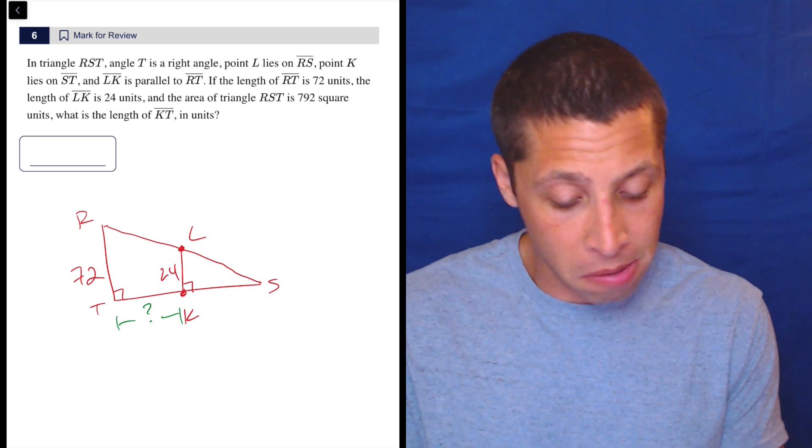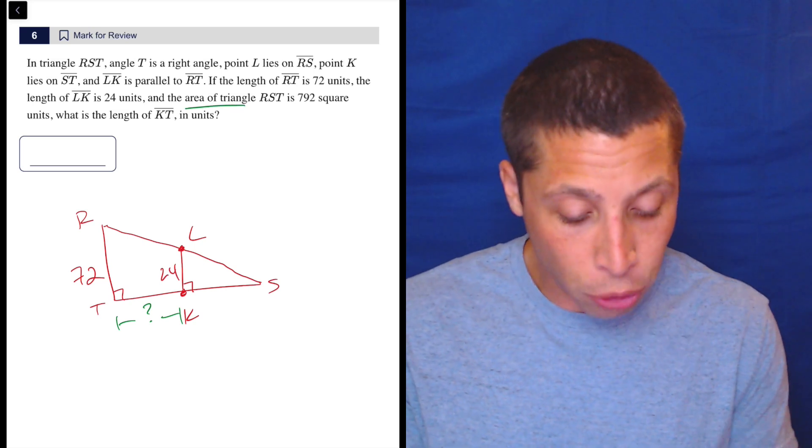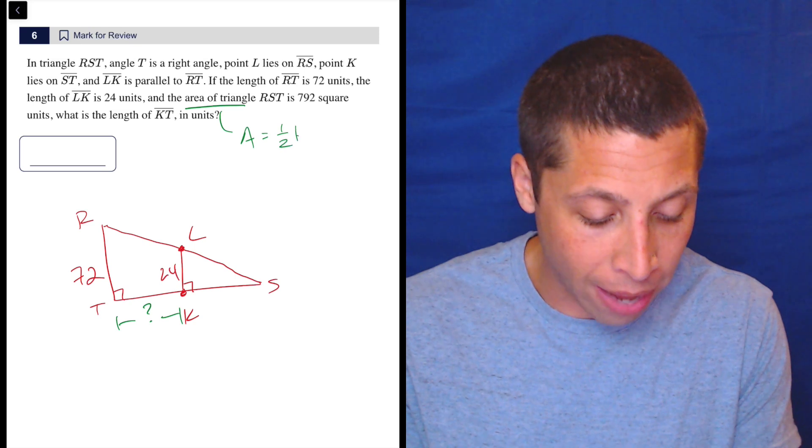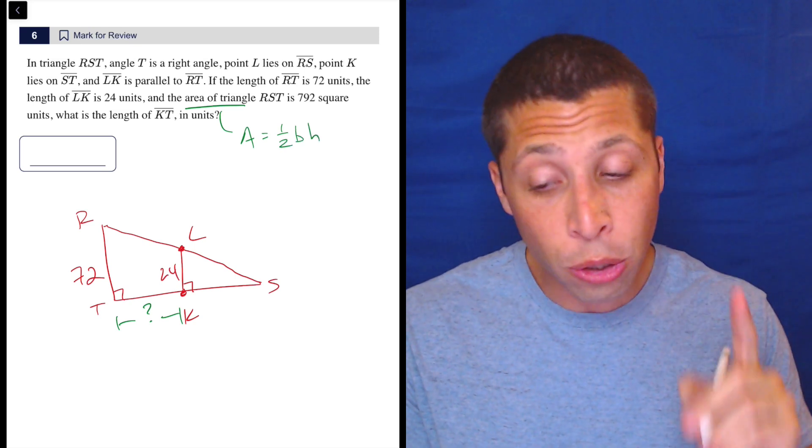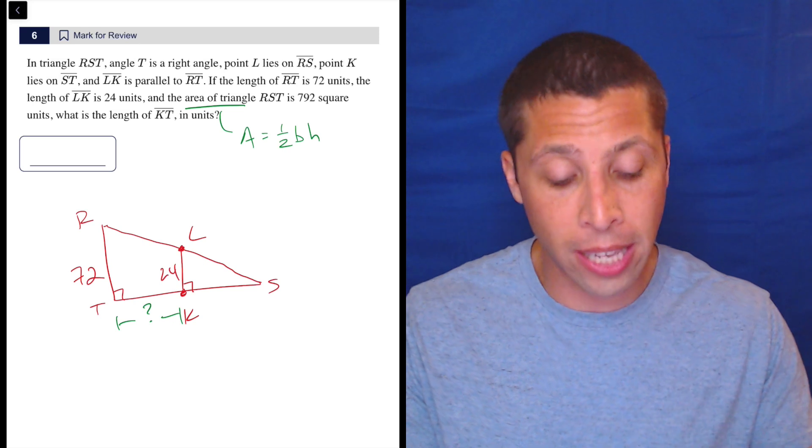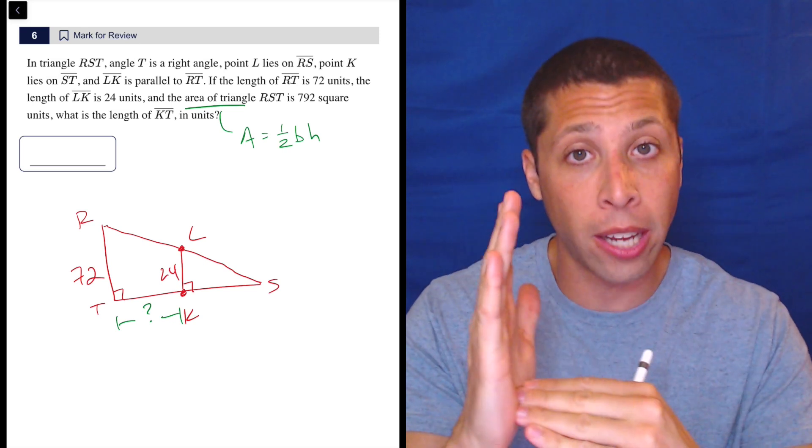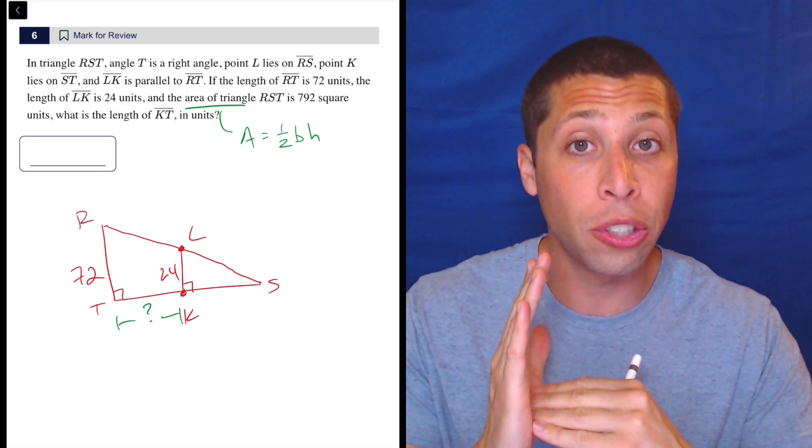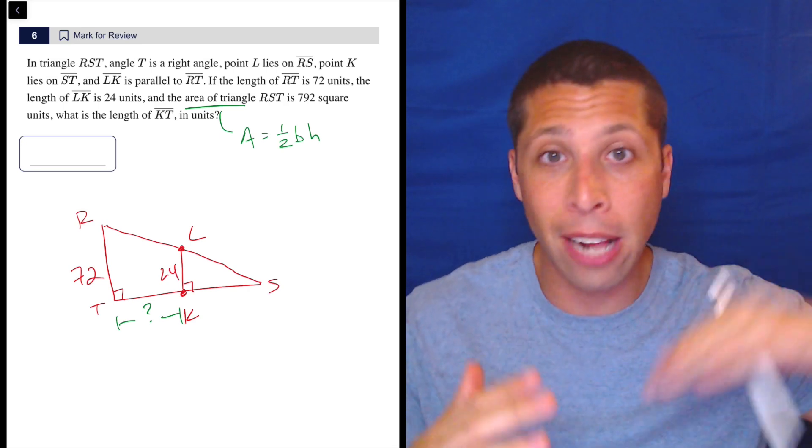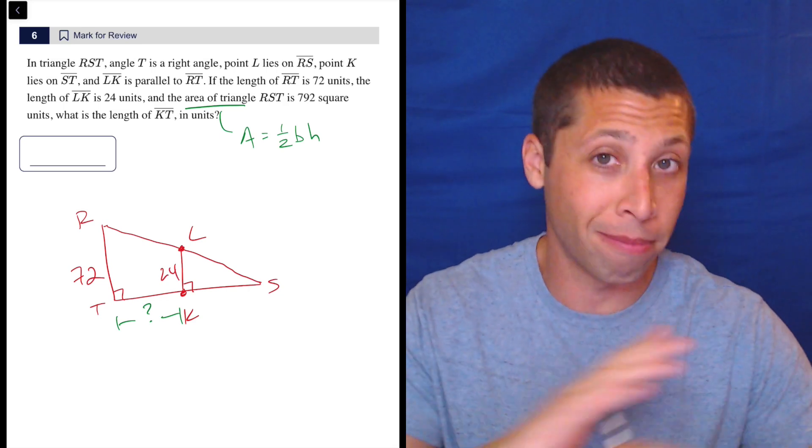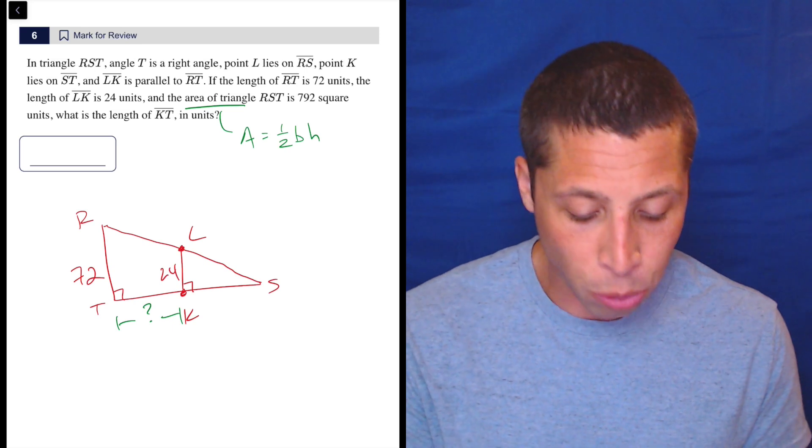So first of all, let's just write down the things we know. Area of a triangle, it's given to us in the reference chart, but it's helpful to know is one half base times height. Now, because we have a right triangle, we are at a huge advantage where we understand the base and the height. Those are going to be the legs of the triangle. They always need to be perpendicular to each other. So if we have a right triangle, those are the ones to go for.